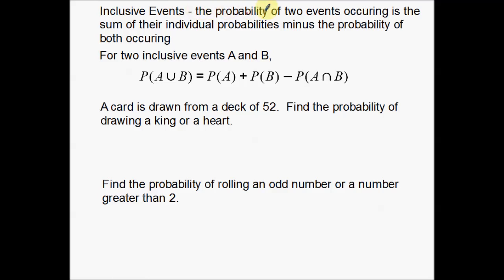With inclusive events, the probability of two events occurring is the sum of their individual probabilities minus the probability of both of them occurring. So here's the notation: for two inclusive events A and B, the probability of A or B happening is equal to the probability of A plus the probability of B minus the probability of A and B both occurring at the same time. This is a little different from mutually exclusive — we have this extra piece on the end where we subtract out when it's possible for both events to happen at the same time.